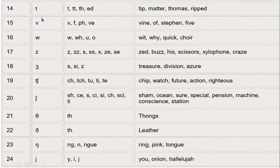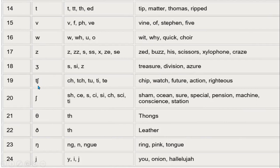There are 24 consonant phonemes, or consonant IPA symbols, in English. For example, the symbol used in 'treasure' and 'television,' the sound in 'chair,' 'watch,' and 'future,' the 'sh' sound in 'share,' the 'th' in 'thong' represented by one IPA symbol, and the 'th' in 'leather' represented by another — these are all among the 24 consonant IPA symbols.